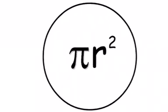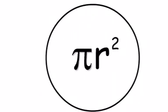Pi r squared gives you the area of the circle, but where does pi r squared come from?